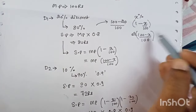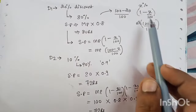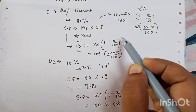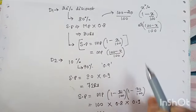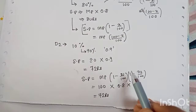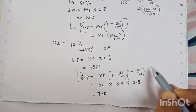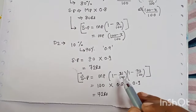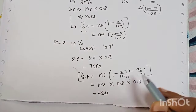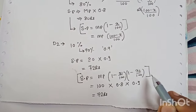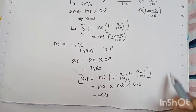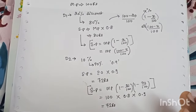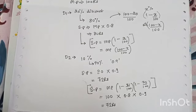When there is a single discount, selling price = marked price × (1 − x/100). When there are successive discounts, selling price = marked price × (1 − x1/100) × (1 − x2/100). If there is a third discount, you also multiply by (1 − x3/100). This was the concept of successive discount.